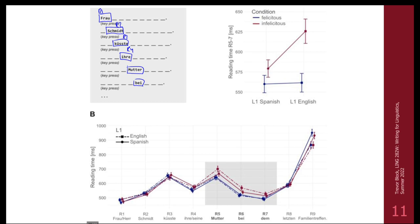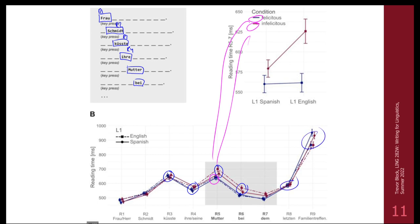You get reading times for each condition and can plot them on a chart. You can see whether different conditions stay together. The red lines — sentences that are infelicitous or cannot be true — tend to take longer to read than felicitous sentences. This continues for another region, but things tend to improve again towards the end, so we might actually see a difference based on reading times.